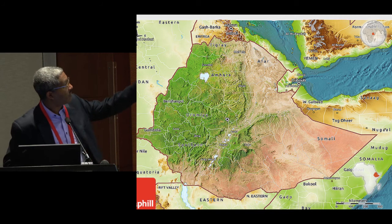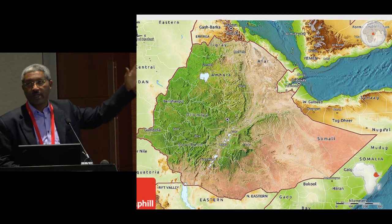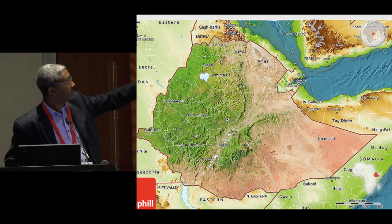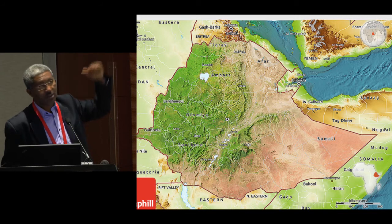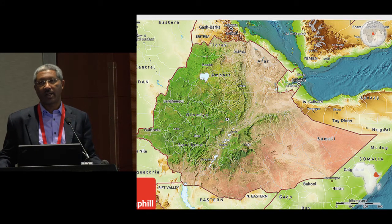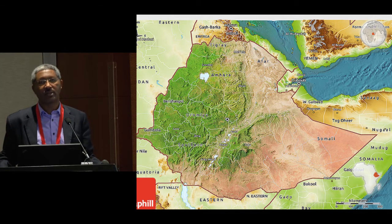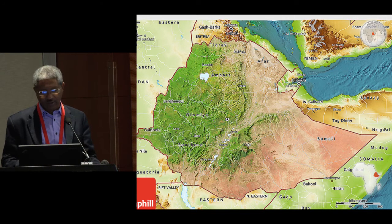Most of the natural forests are in the south and south-west. Much of the participatory forest management we are talking about would be on this side, but the central highlands in northern Ethiopia is where we have most of the rural population, where agriculture has been dominating and land has been degraded for centuries. In this area we talk about area exclosures.